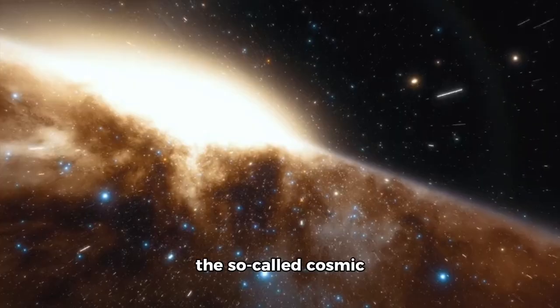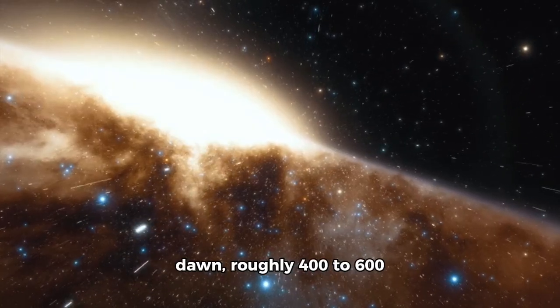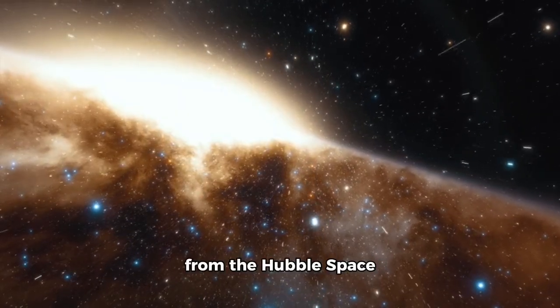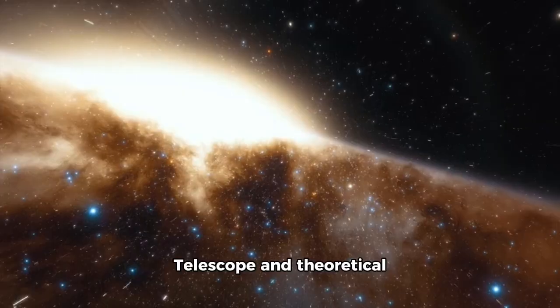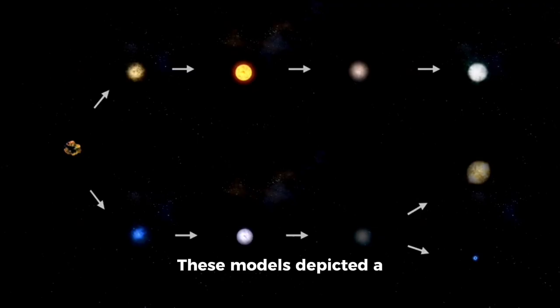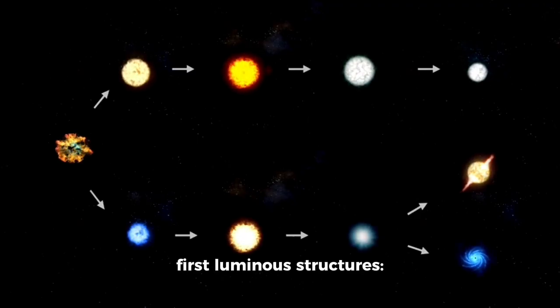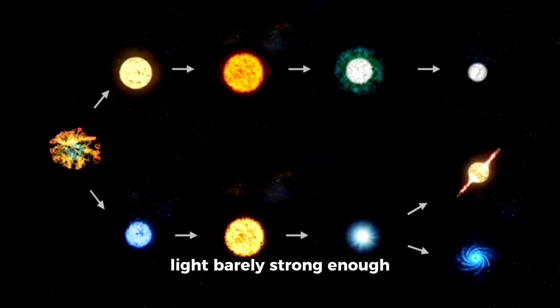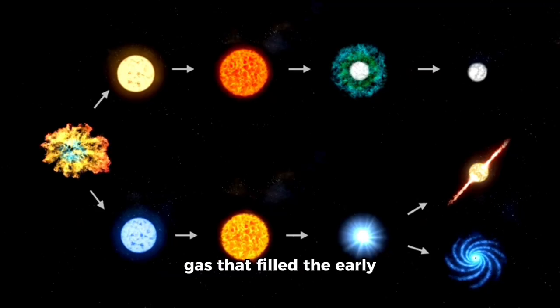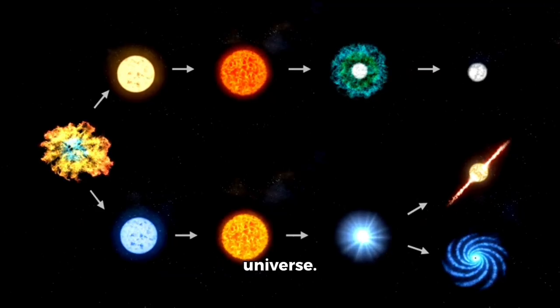Our previous knowledge of the so-called Cosmic Dawn, roughly 400 to 600 million years after the Big Bang, came primarily from the Hubble Space Telescope and theoretical simulations. These models depicted a gradual development of the first luminous structures, stars forming slowly, their light barely strong enough to penetrate the dense, hot gas that filled the early universe.